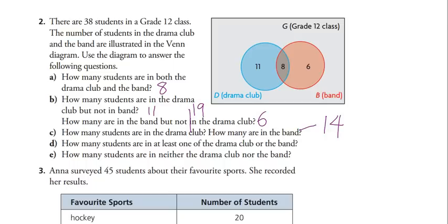How many students are in the drama club? Nineteen — that's the entire blue circle including the overlap. How many are in the band? Fourteen — the entire red circle including the overlap. How many are in at least one of the drama club or the band? How many are in neither? 38 minus 25 accounted for is 13, written outside the circles. We need to understand the meaning of 'and,' 'or,' 'not' (prime), and 'neither nor.'